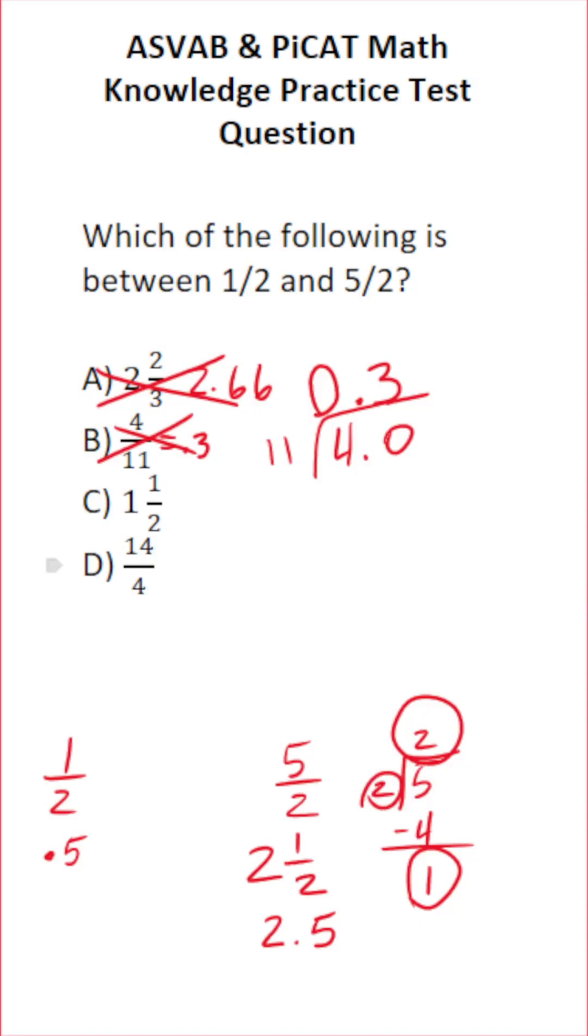What about 1 and ½? 1 and ½ is the same thing as 1.5, and as you can see, this does fall in between these two numbers. So the correct answer to this one is C.